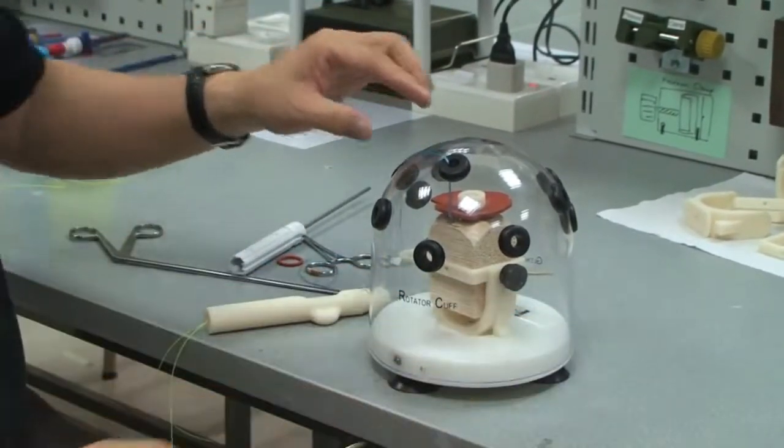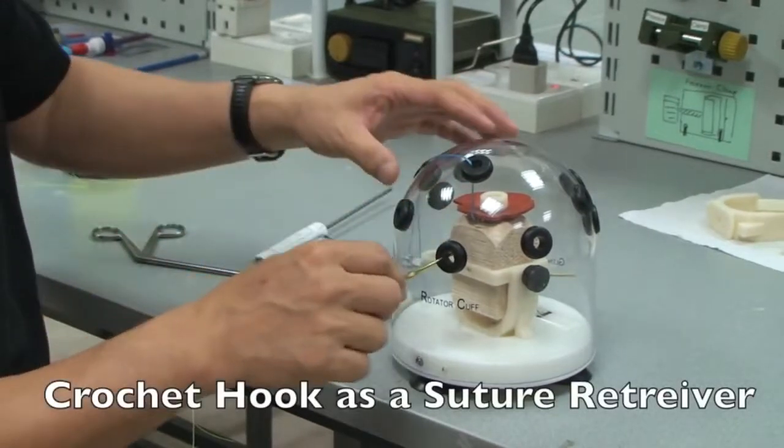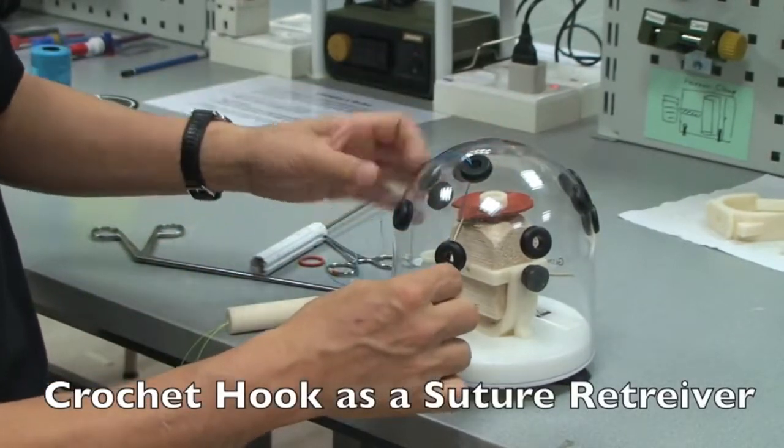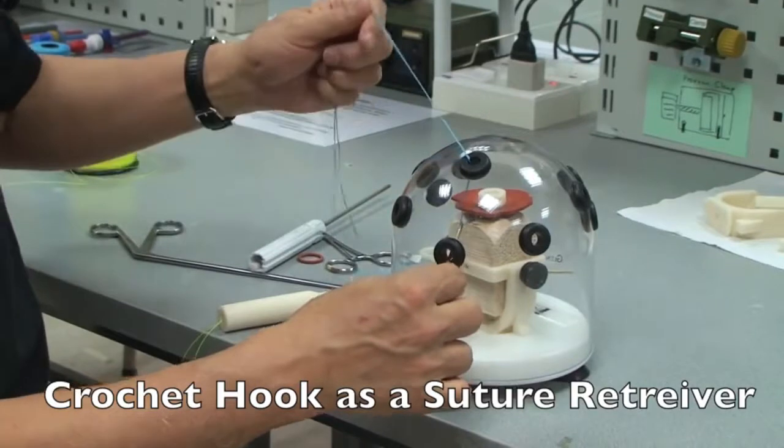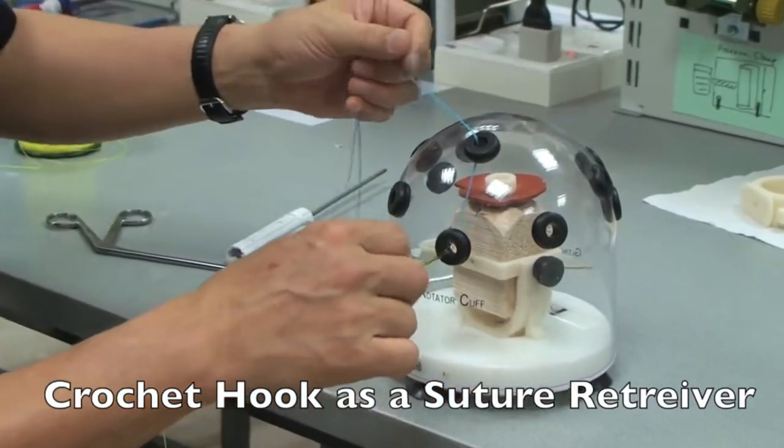Now I'm going to transfer the suture from the superior portal to the lateral portal using a crochet hook. To get that, I put a little bit of tension. Drag it out.